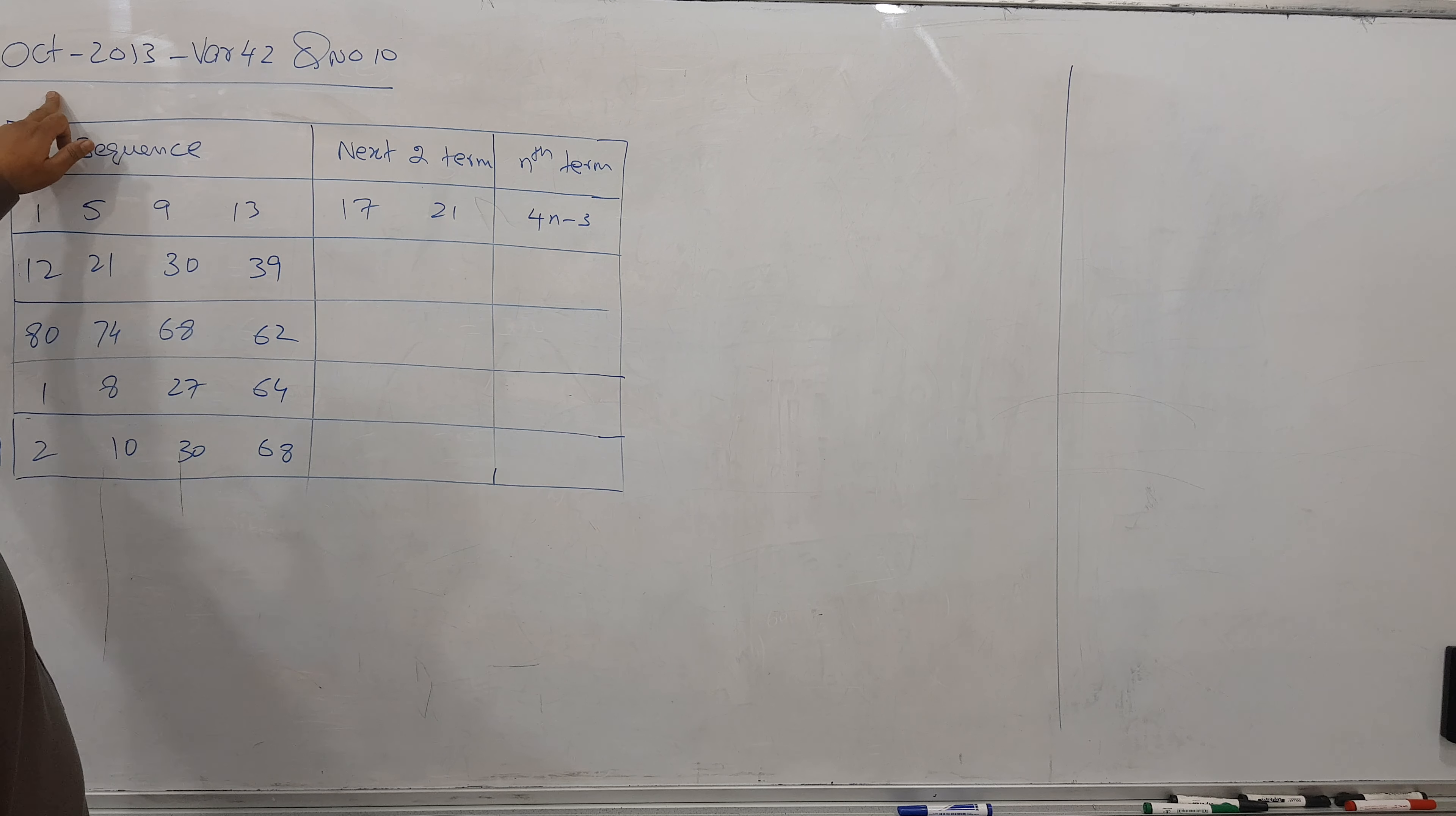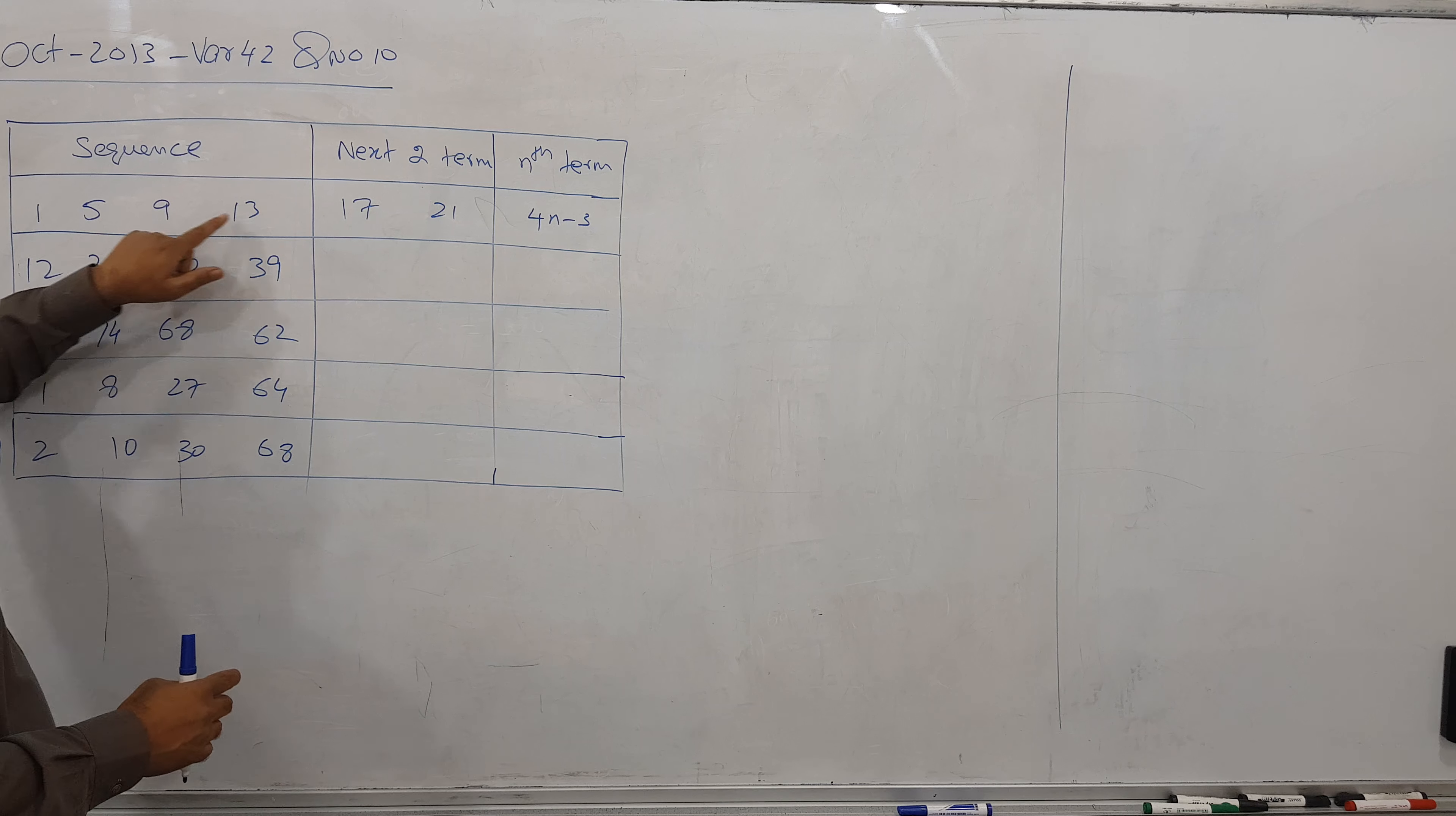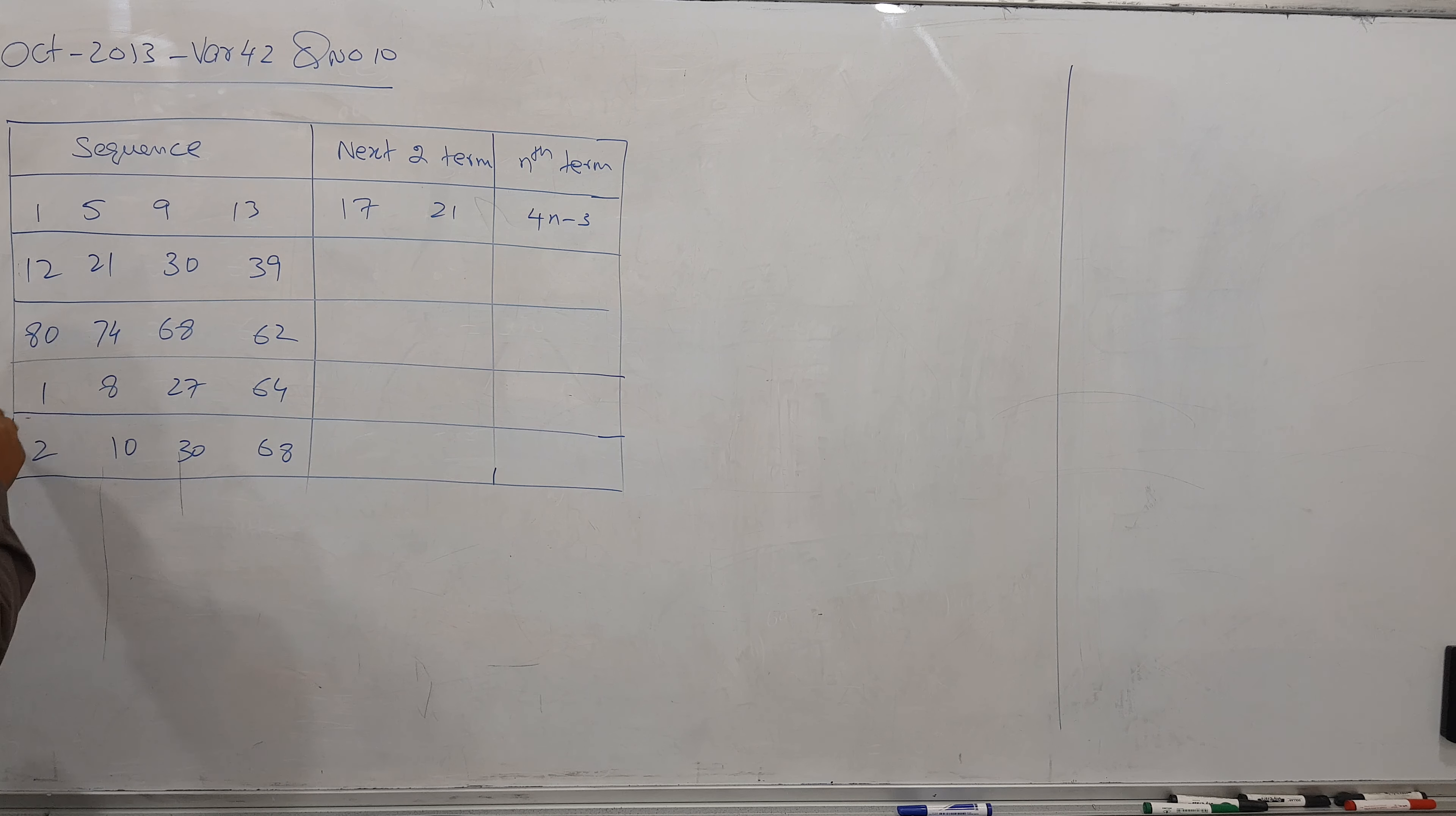This is October 2013 variant 42 question number 10 and the topic is O level sequences. I have one table mentioned here with the sequence 5, 9, 13, and this sequence is given with next two terms and the nth term is given. So we have to find next two terms for this sequence A, B, C, D.